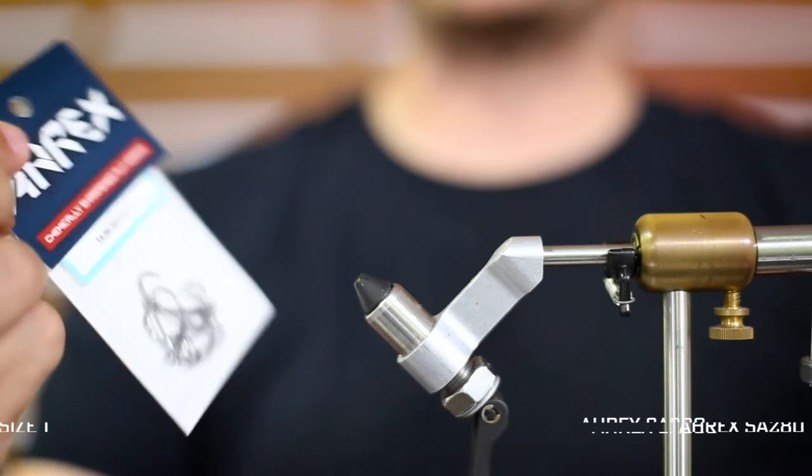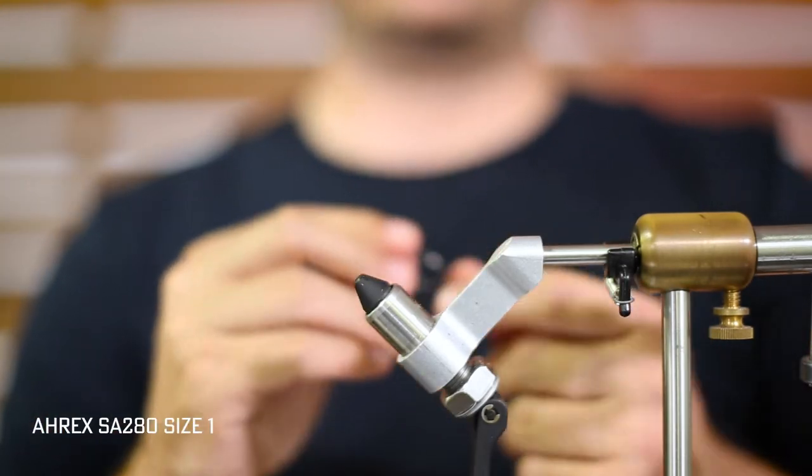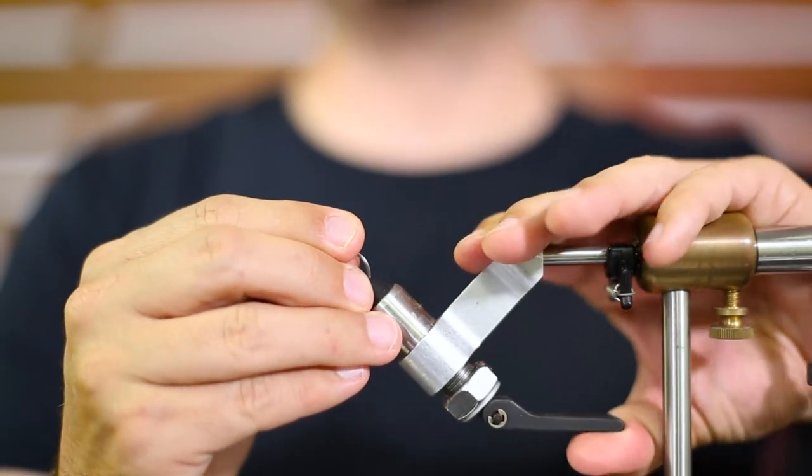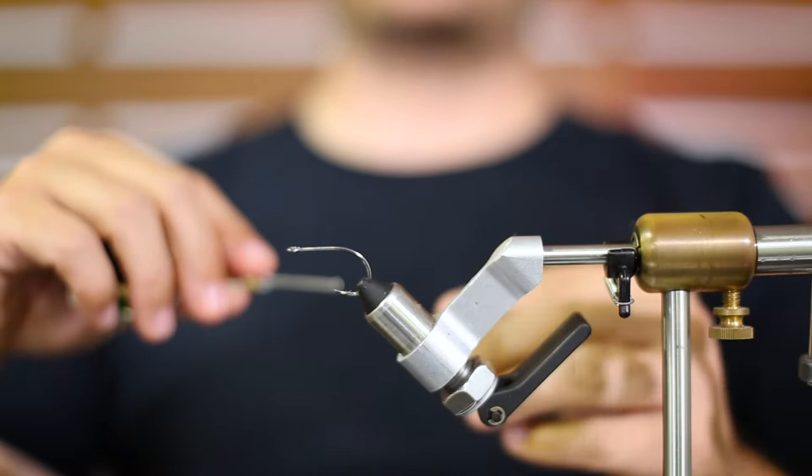We've got an A-Rax SA-280 size 1. Nice short shank wide gap hook. You can also use like an SL-12 in a 1-0. It's about similar in size.